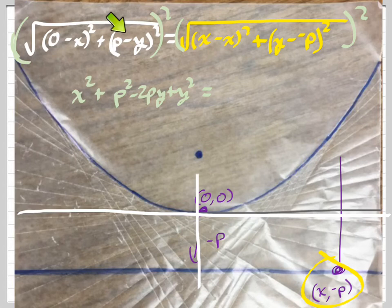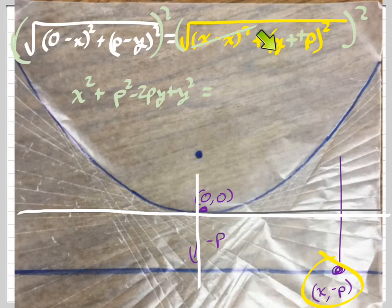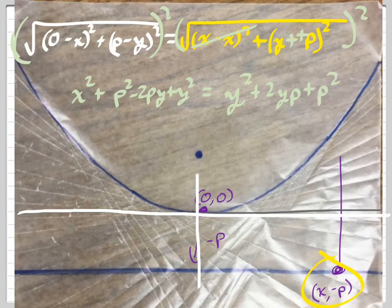So all I did was I squared this thing right here, and now on this side, I got to do the same business. Now, what is x minus x going to give us? Zero. So I have zero squared, which is just zero, so that's gone. And then we have, if I change this a little bit to say y plus p, if I square that, that's going to be y squared plus 2yp plus p squared.